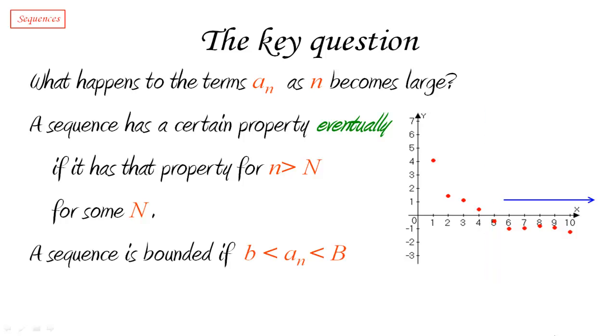We're going to say that the sequence is bounded if all the terms of the sequence are between two numbers. So they're always between some lower boundary lowercase b and some upper boundary capital B. So that means that, again, all the dots here of the graph are going to be in that horizontal strip. They're never going to go out of there. So if all the dots are going to be between some kind of strip between two finite numbers, then we say that the sequence is bounded.